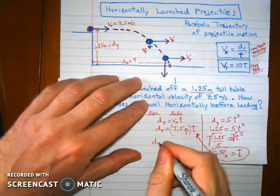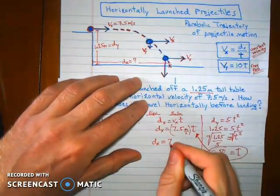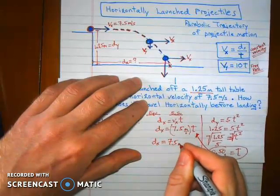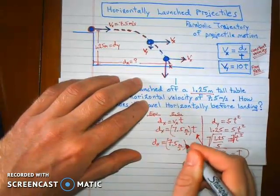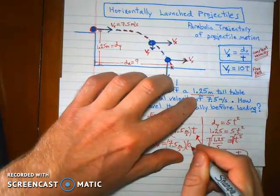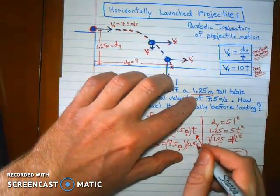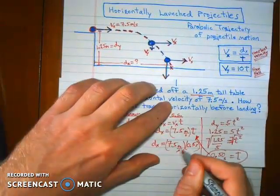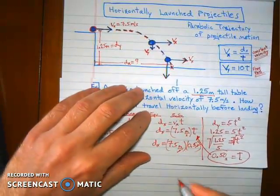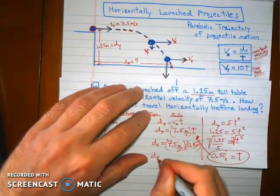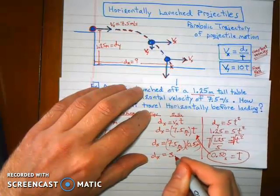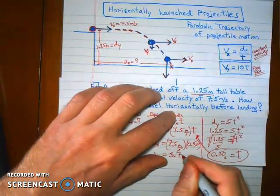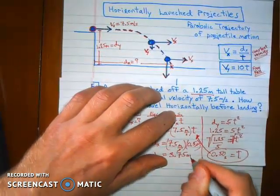So now we are almost done. dx equals 7.5 meters per second times 0.5 seconds. Your seconds will cancel. You'll be left with meters. 7.5 times 0.5 gives you a dx of 3.75 meters.